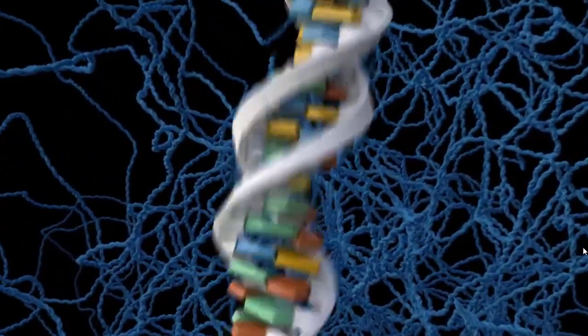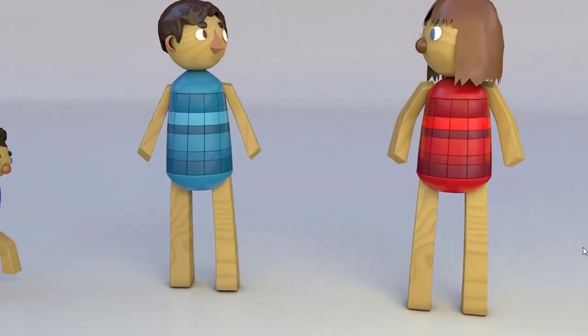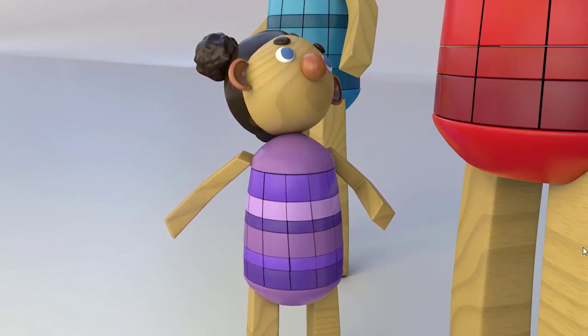When DNA changes occur in cells that will give rise to eggs or sperm, they can be passed down to offspring. Each one of us has about 60 new variations that were not present in our parents.